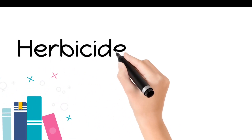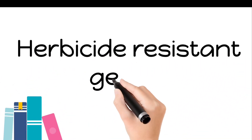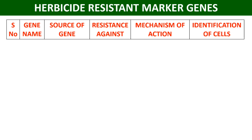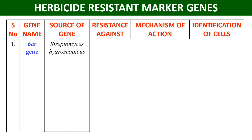Hello everyone, welcome back. Without any delay, let's start the video on herbicide resistance genes, because these genes provide resistance against some herbicides. The first example is the BAR gene, and the source of this gene is Streptomyces hygroscopicus.